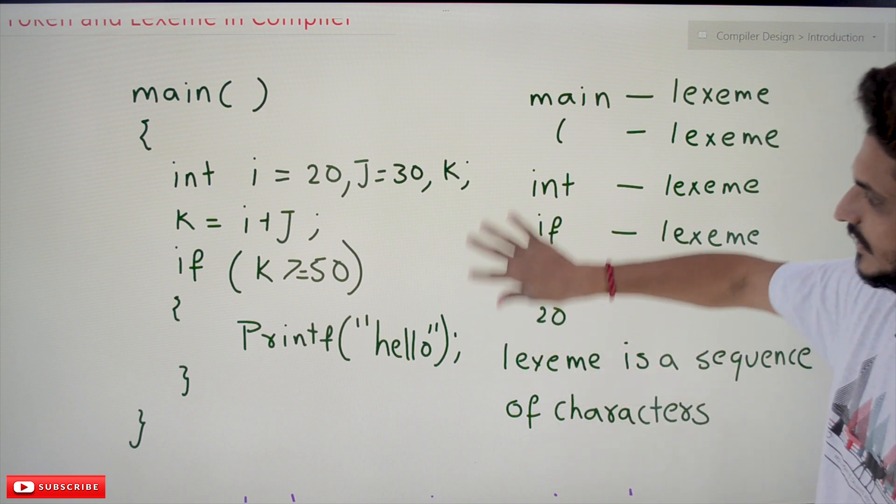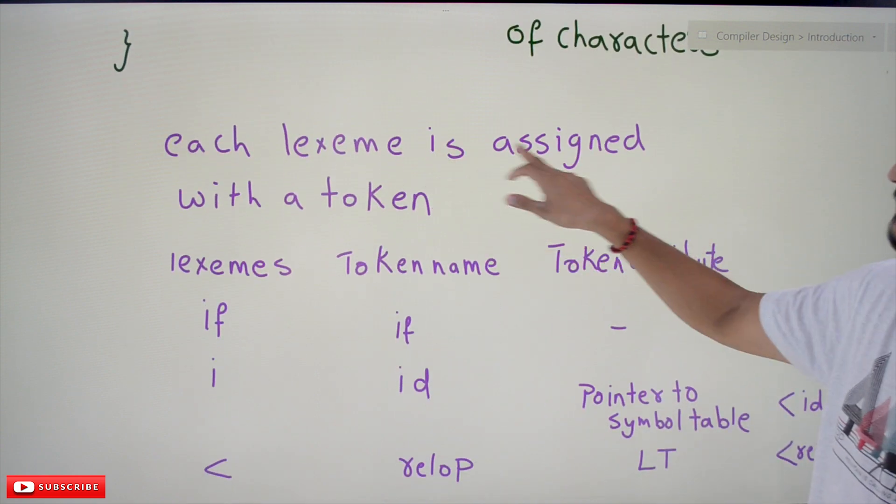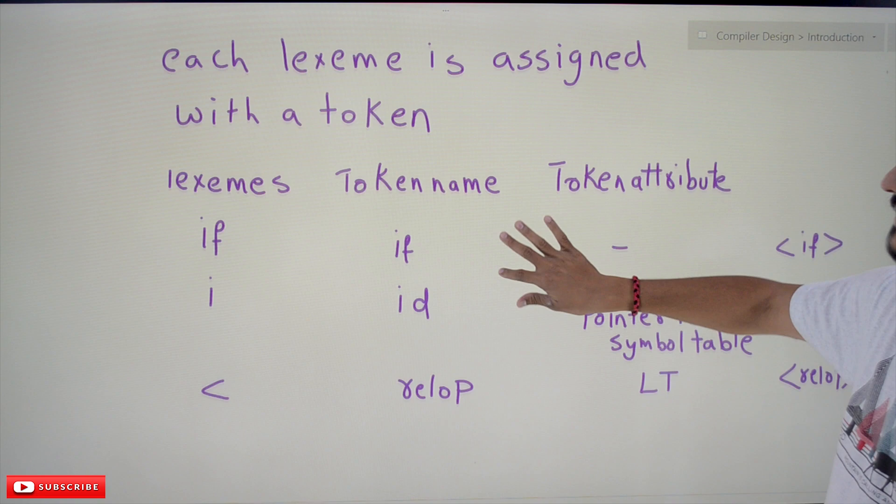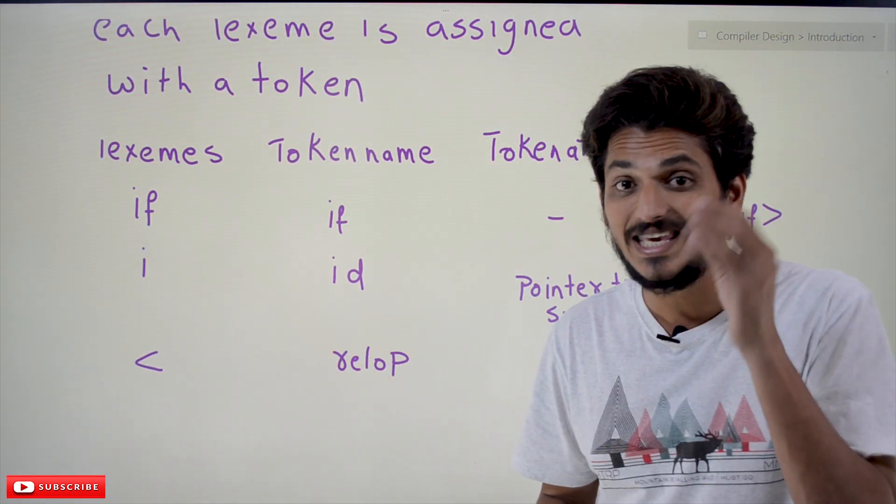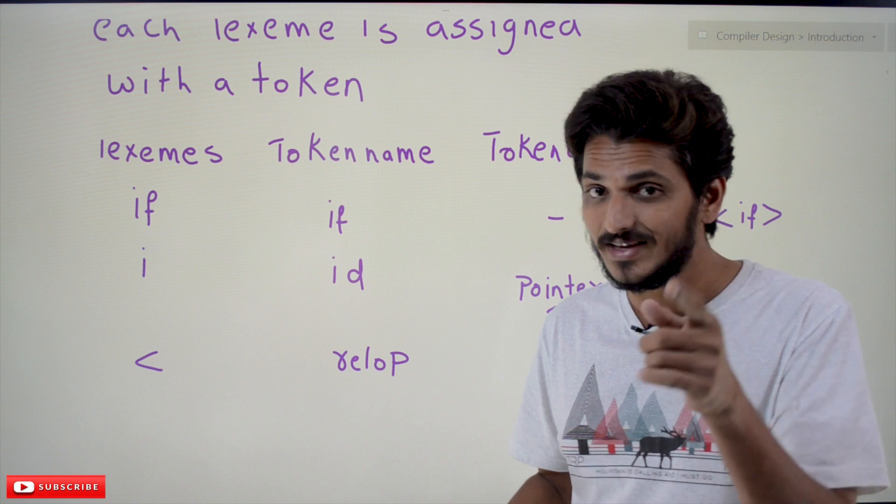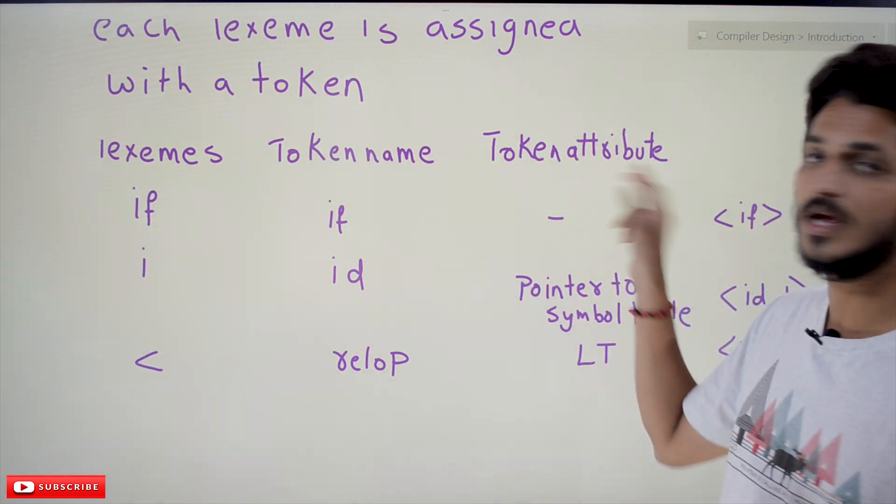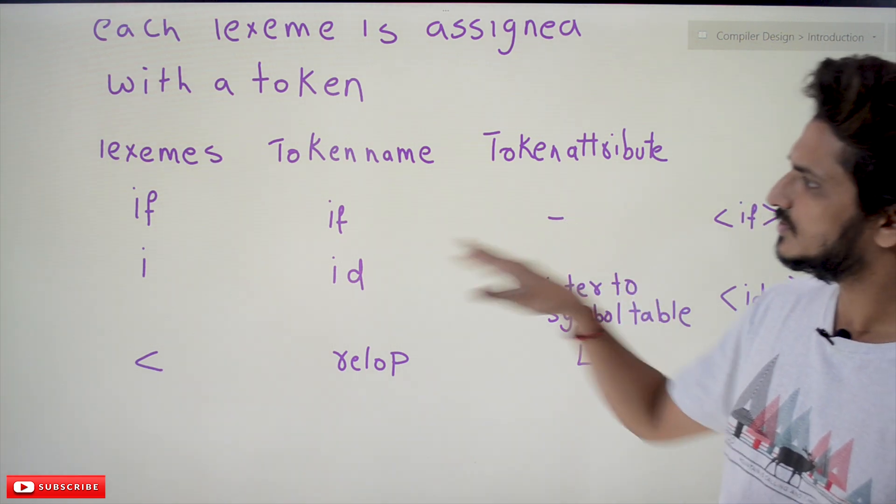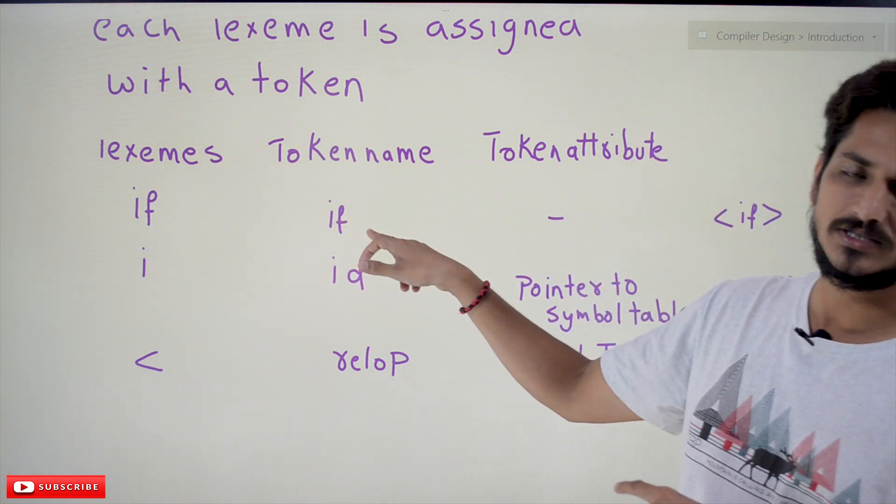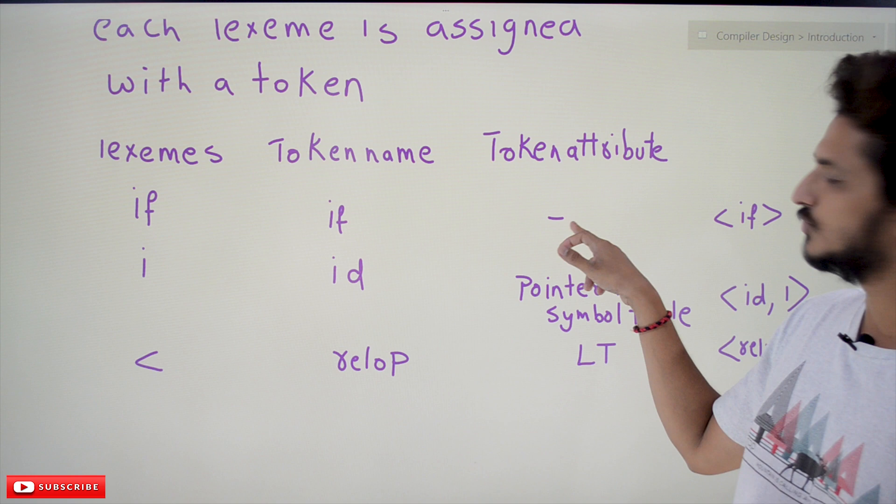You have to understand that each lexeme is assigned with a token. Take the example lexemes. If you find 'if', 'if' is a keyword. It is having a separate token name and a token attribute. For keywords we don't have any token attributes. For 'if', the token name is given as 'if' and there is no attribute.